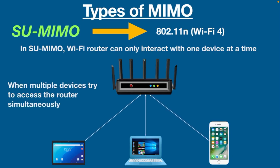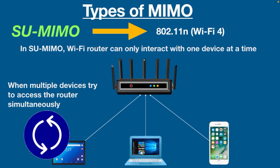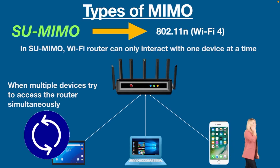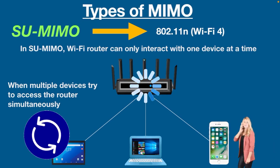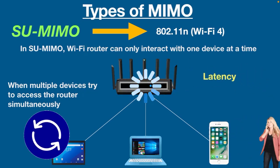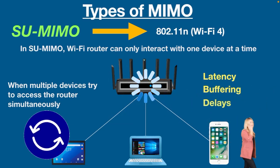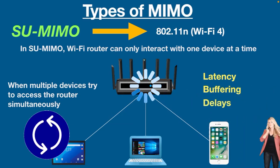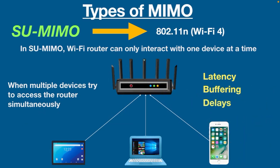So where does the problem occur in Single-User MIMO? When multiple devices try to access the router simultaneously — for example, if one person is uploading a video and another is doing a conference call — in this case the data stream will choke, resulting in latency, buffering, and delays. Single-User MIMO was okay for regular use and sometimes we didn't even notice our devices waiting.